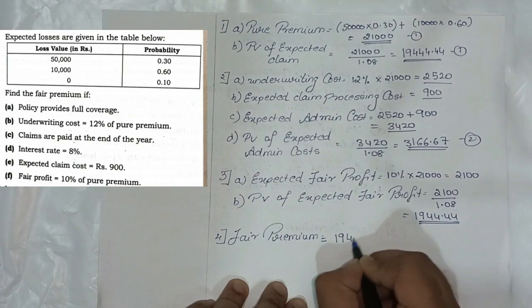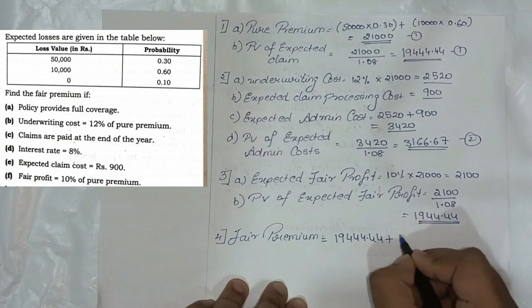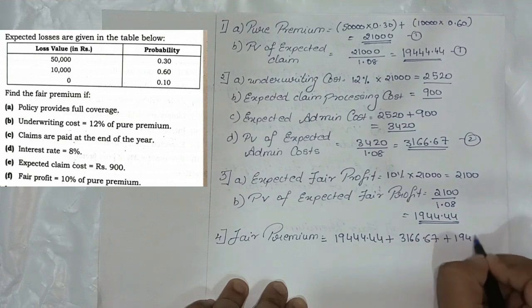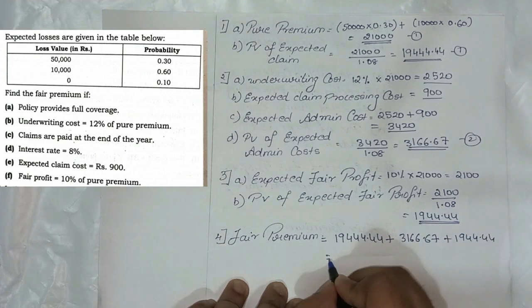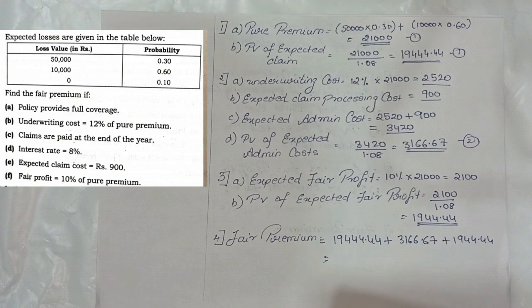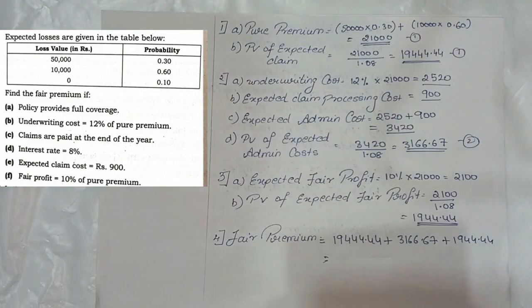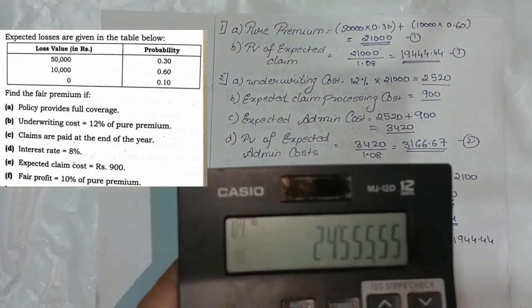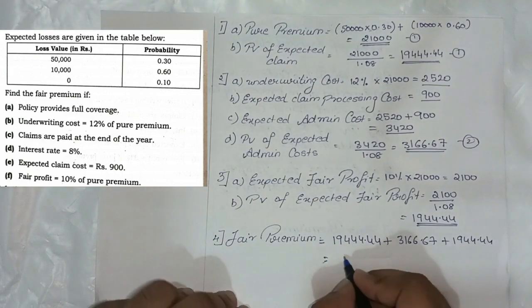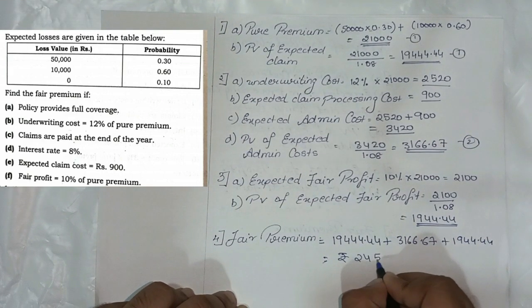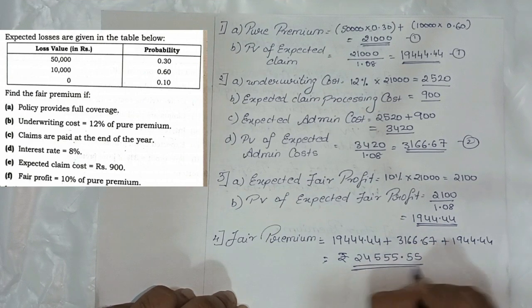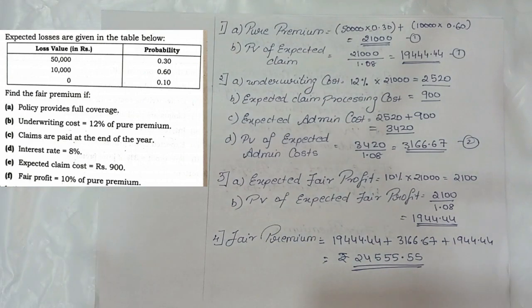Finally, the fair premium is the sum of all PV components: 19,444.44 + 3,166.67 + 1,944.44 = 24,555.55. So the fair premium is 24,555.55. This is how we solve the third sum from this question paper.